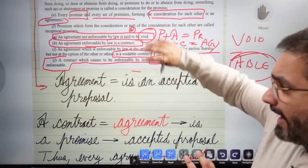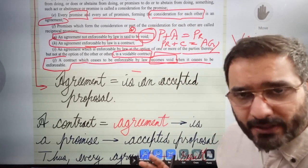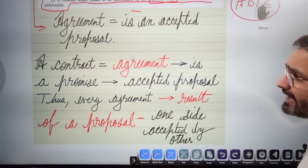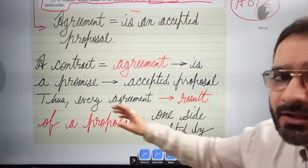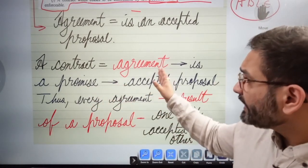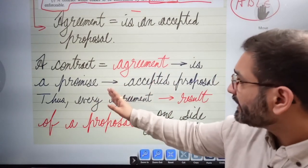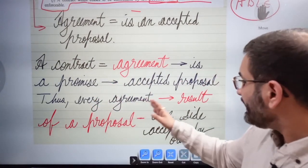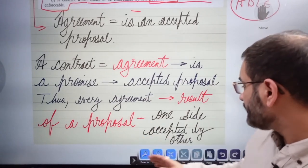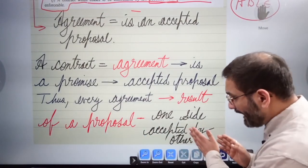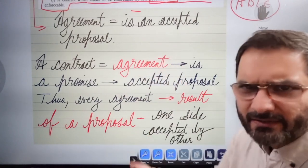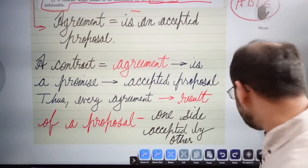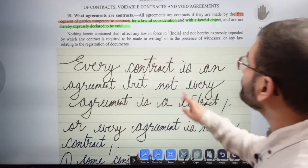An agreement is an accepted proposal. In a contract, there has to be an agreement; if there is an agreement, there has to be a promise; if there is a promise, there is an accepted proposal. Thus every agreement is the result of a proposal by one side which is accepted by the other.